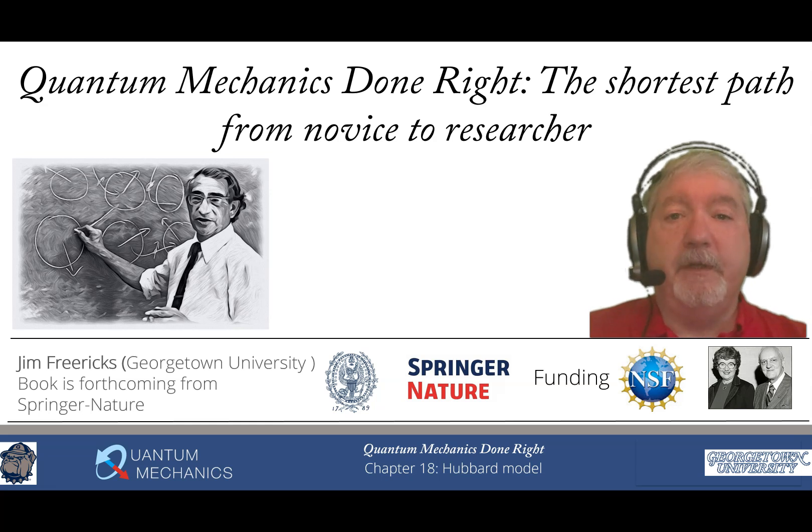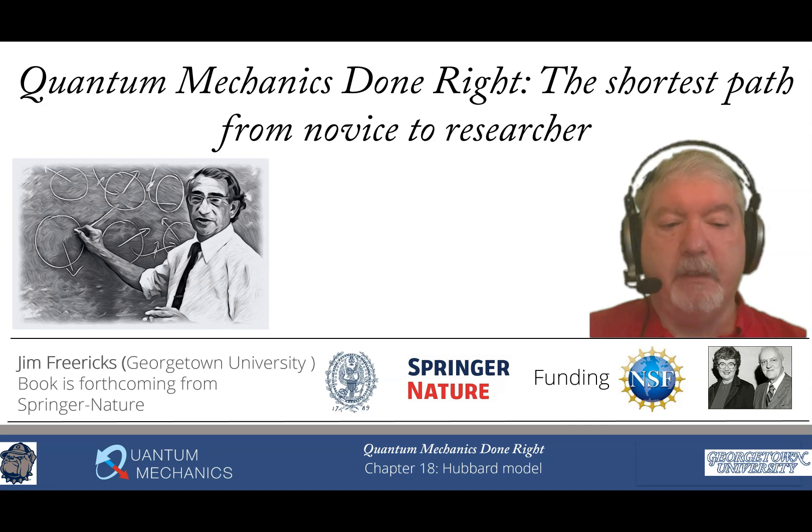Welcome to the 24th video of Quantum Mechanics Done Right: The Shortest Path from Novice to Researcher. In this video we're going to be talking about Chapter 18 on the Hubbard model. Here on the left is a picture of Hubbard. You can see those circles are lattice sites and those little arrows are electrons sitting on the lattice sites. He's giving a lecture about the Hubbard model itself.